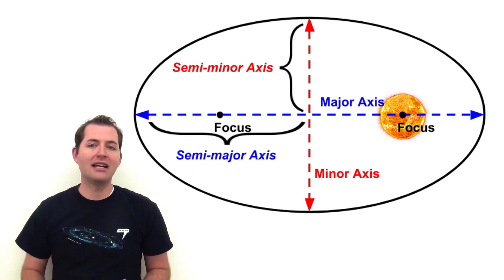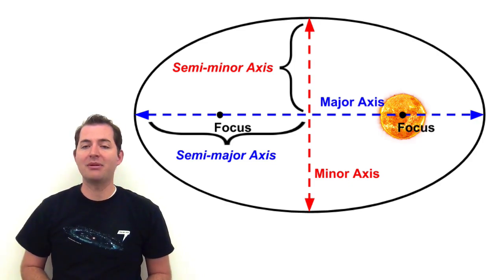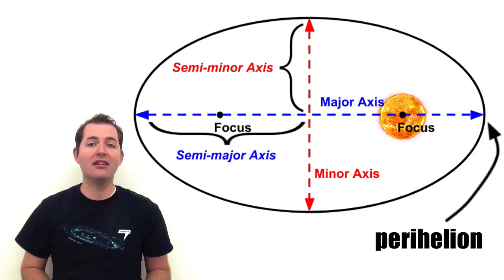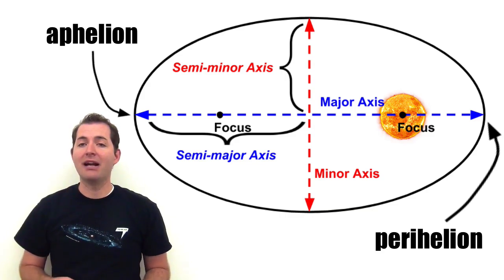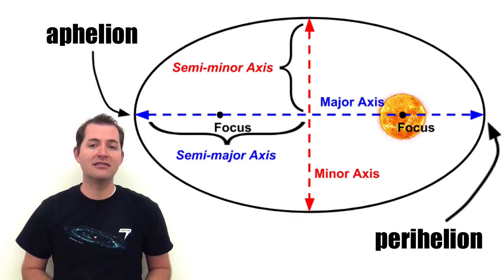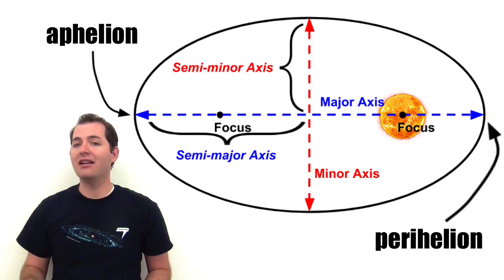Now, when we're talking about orbits and ellipses there are two other terms that can be helpful. They are the perihelion and the aphelion. The perihelion is when the planet is the closest it ever gets to the sun and the aphelion is the furthest the planet gets from the sun.